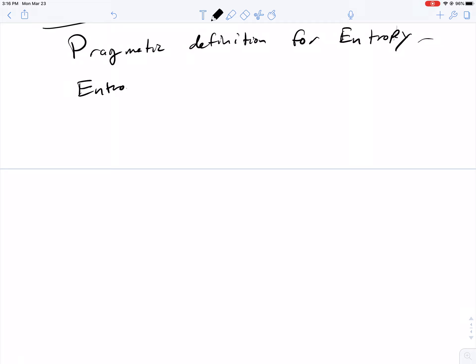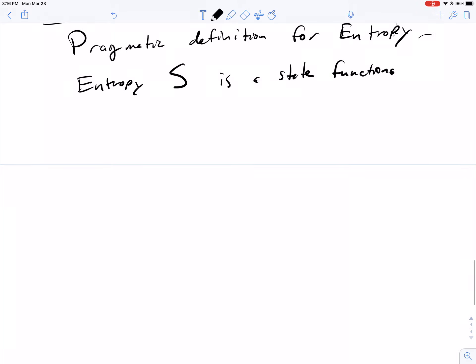The entropy, S, is a state function. In a system where there are heat flows across boundaries, Q dot, and work—this could be shaft work, W_S dot, and pressure-volume work, which you recall from the energy balances is P dV/dt.